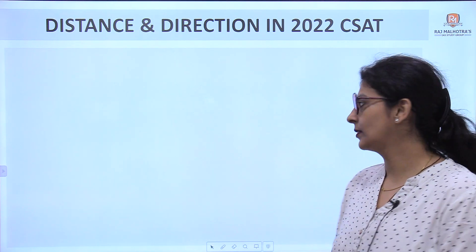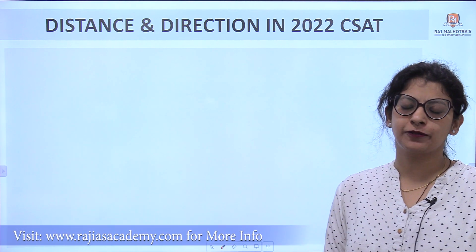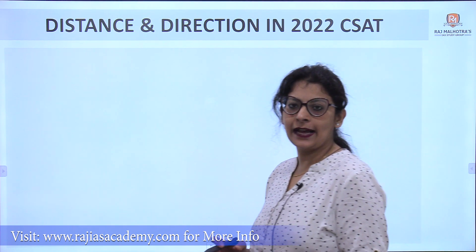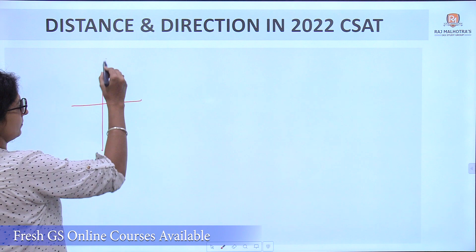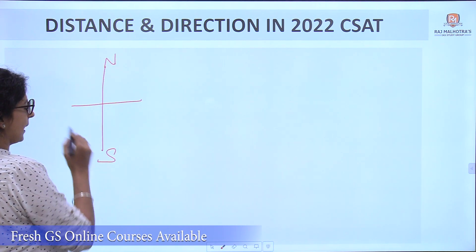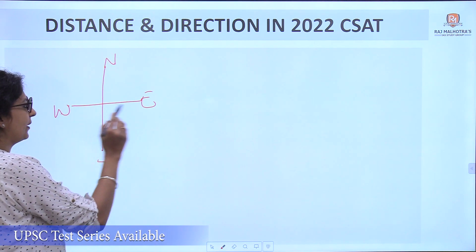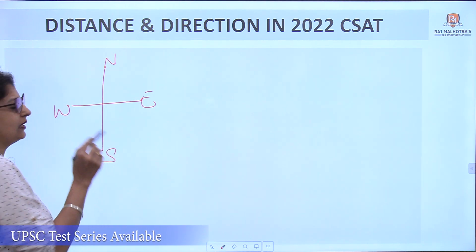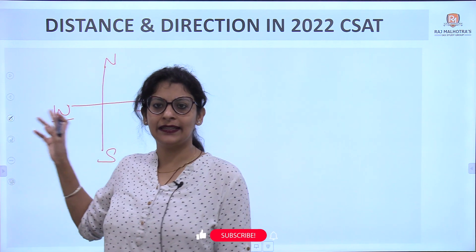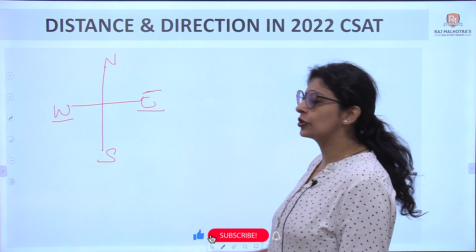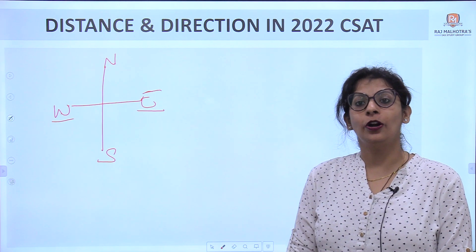Let's clear the concept first. We have basically four types of direction: North, South, West, and East. North is upward, South is downwards. For West and East, we can remember: W is on the left side and E is on the right side.